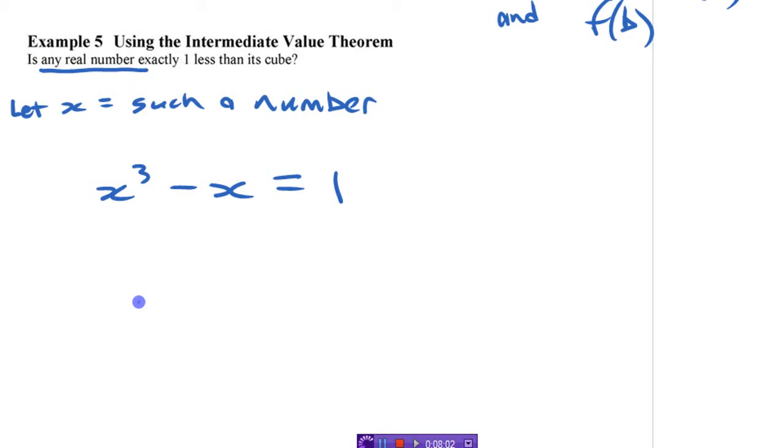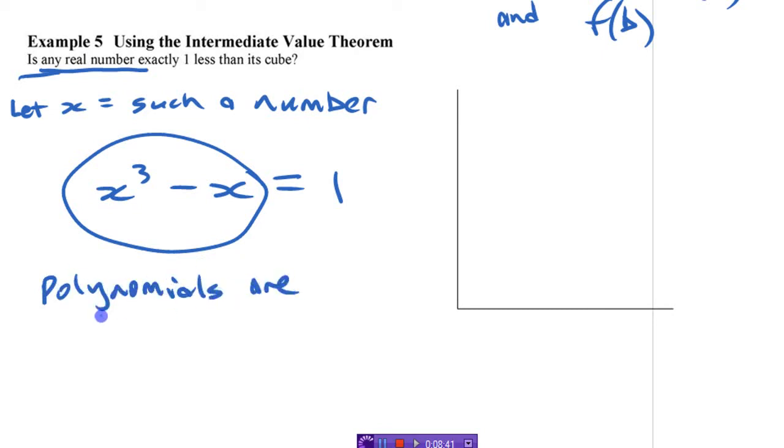But with the intermediate value theorem, you can, if the question is just, is there a number and you don't actually care what it is, you just want to know, is there? It's pretty easy to argue that there has to be if you think about a graph here. So this is, let's maybe do a better job of making this graph here. So there's some axes. If we know, if we find two points in there, and then we know this is continuous, this function, polynomials are always continuous. They're continuous for all real numbers. You have to know that fact. Polynomials are continuous for all real numbers.